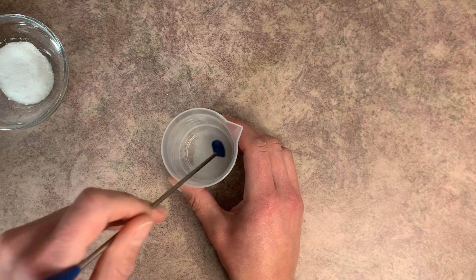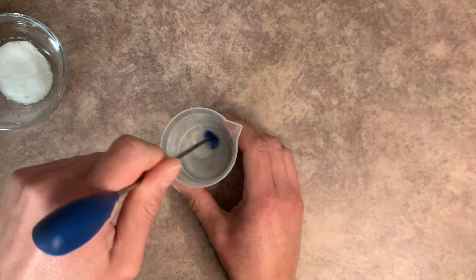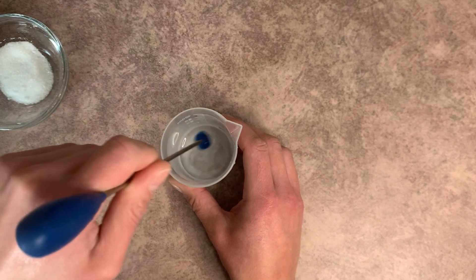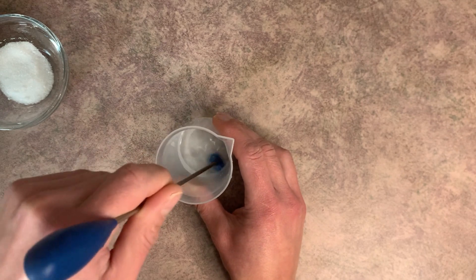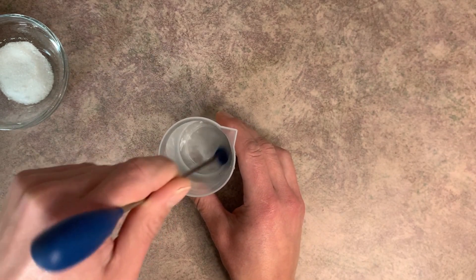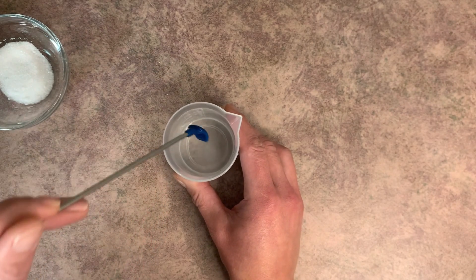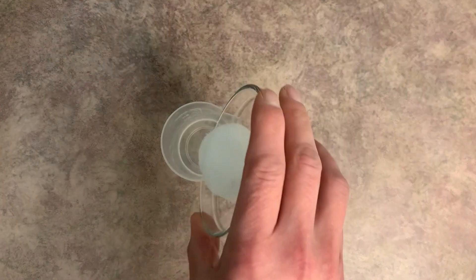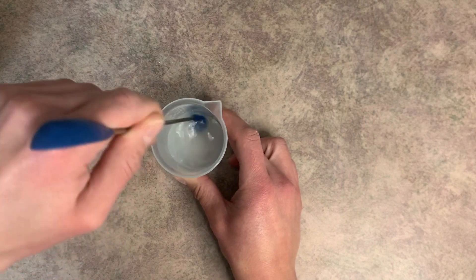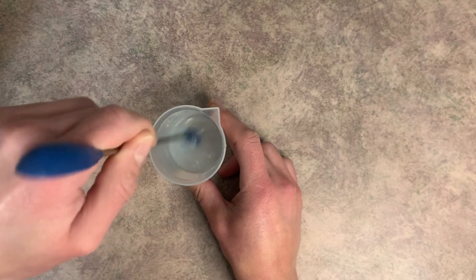And what we're going to do is we are just going to mix the citric acid into the water. Now you're going to want to add it in slowly and we're going to mix it until it completely dissolves. It's going to take just a little bit of patience here to get it all mixed in.